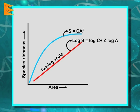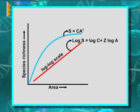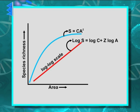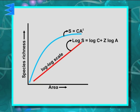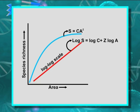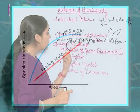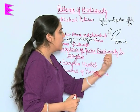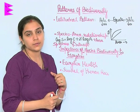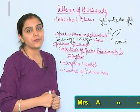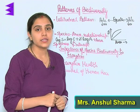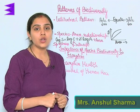In this equation, log S is species richness, A is area, and log C is the y-intercept. Now, the importance of species biodiversity to the ecosystem: for the sustenance and survival of the human race, we need biodiversity.